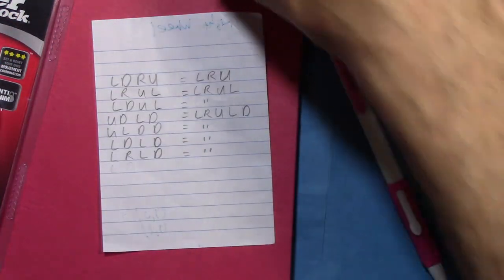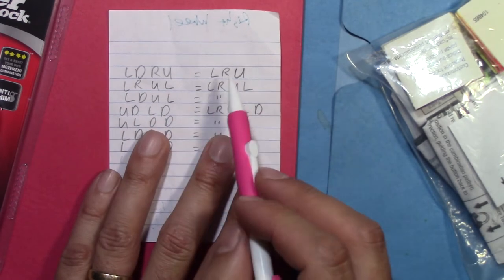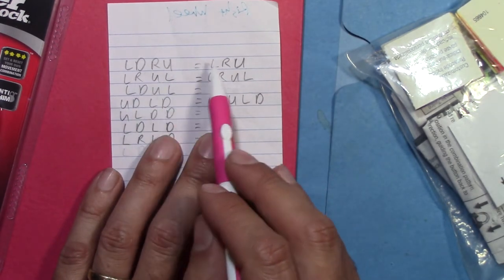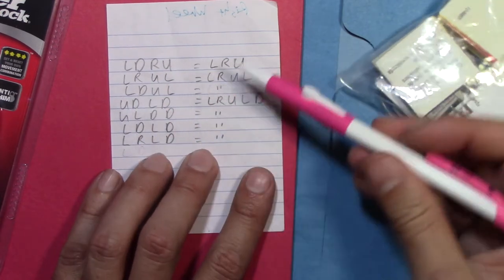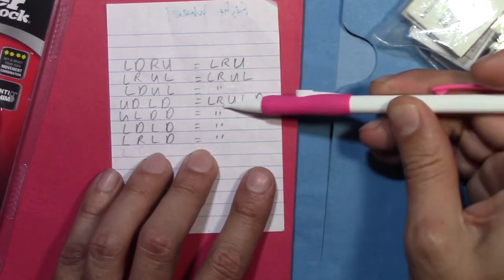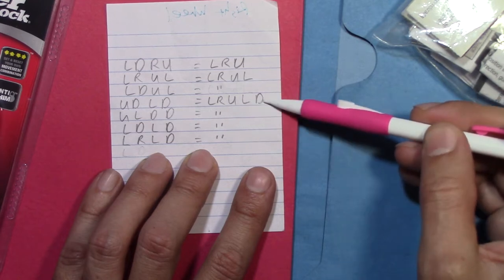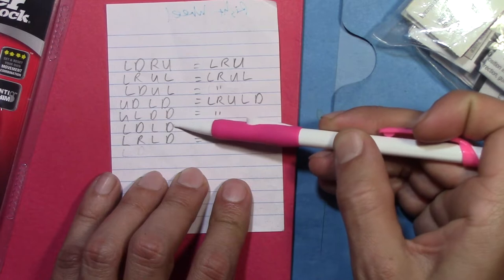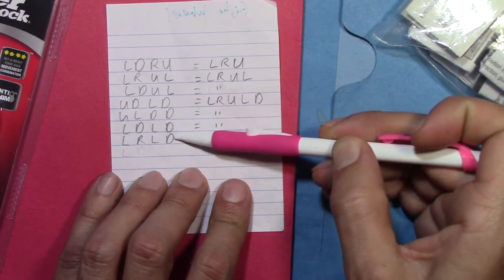The point is that there are multiple inputs that can lead to the same state. Therefore there are equivalent codes like this left right up. This left right up left down is equivalent to one, two, three, four different factory codes.